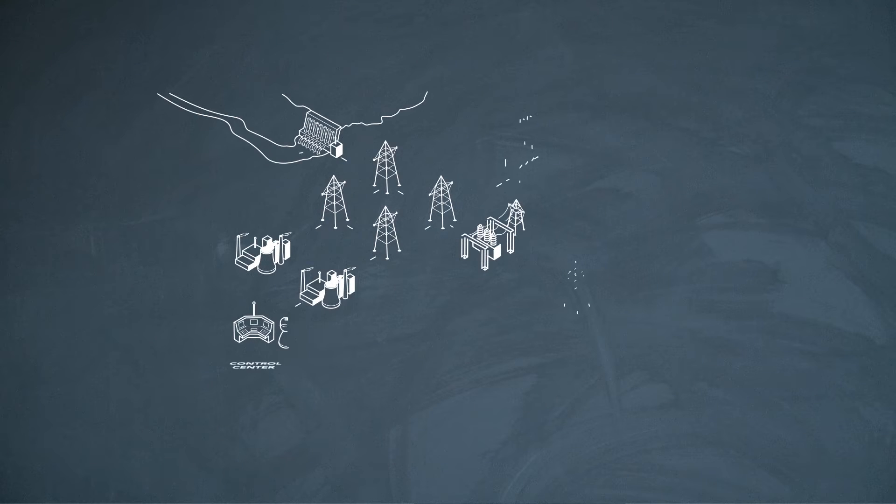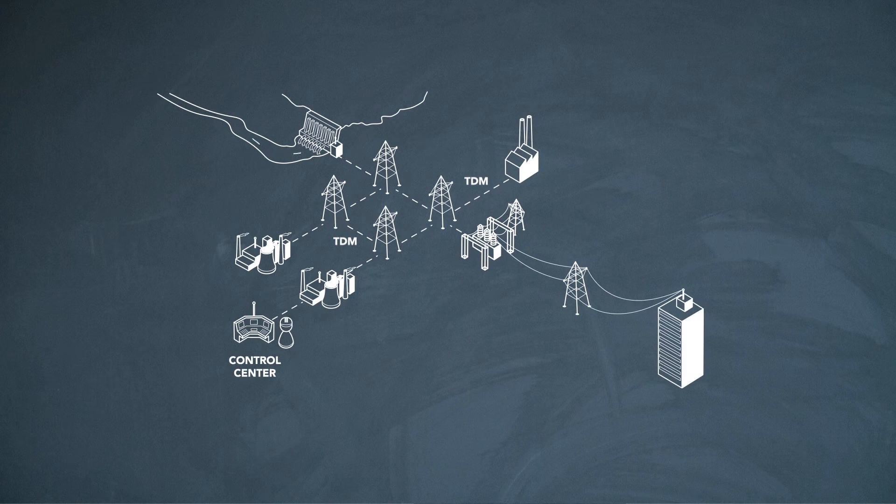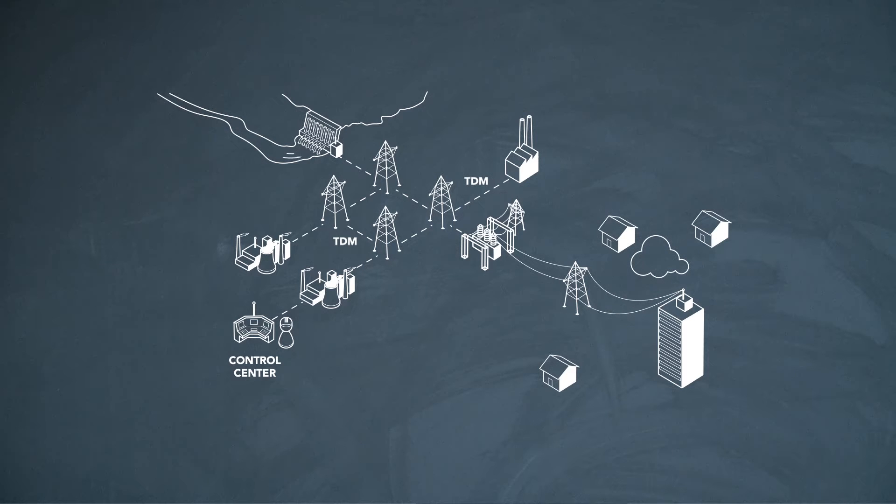Network modernization is an important topic right now. With much of the existing network designed decades ago, it's becoming very expensive and inefficient to operate. So utilities are under a lot of pressure to modernize that infrastructure. And we can see some of that pressure in the fact that today many carriers are starting to discontinue the existing services that have been running in those networks.